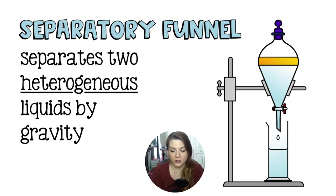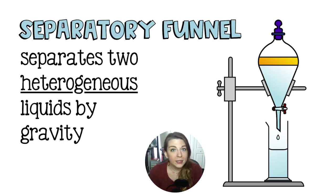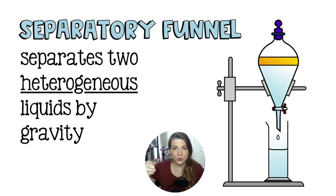Sometimes you may hear your teacher mention decanting, which means pouring the oil off the top, or using a pipette to remove it. Decanting is less smooth than a separatory funnel because you risk shaking and mixing the two layers as you pour. With a separatory funnel held in a ring stand, everything flows down smoothly as long as you don't go too quickly.